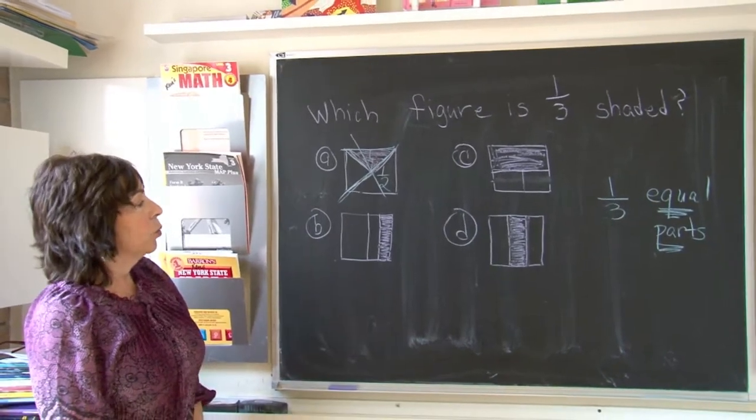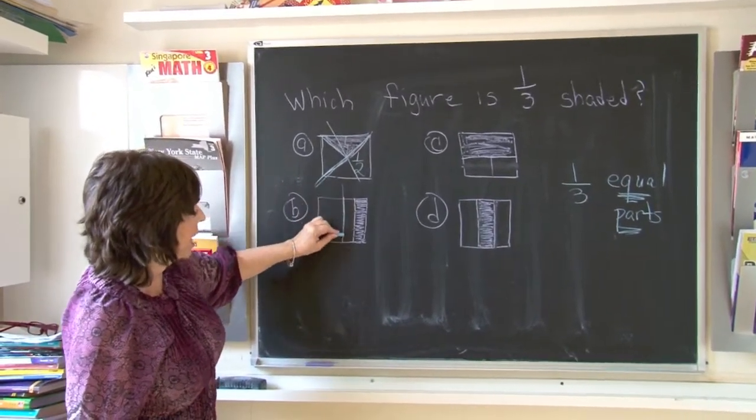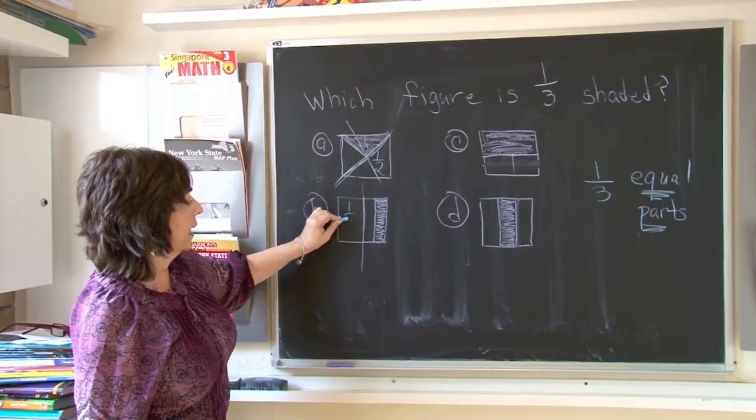If we look at B, once again, I have cut the square in half in a different way. So this, once again, is one-half.